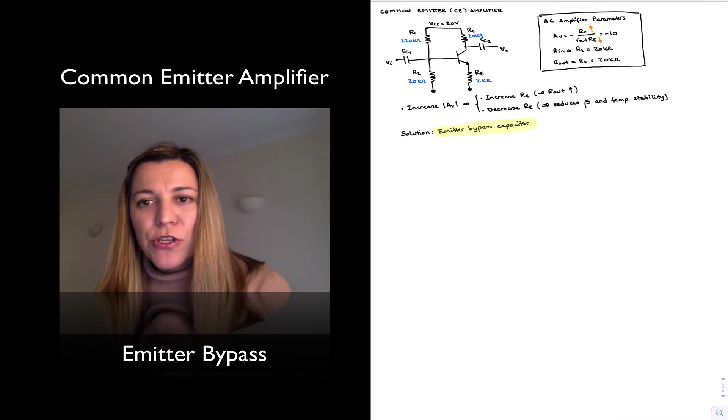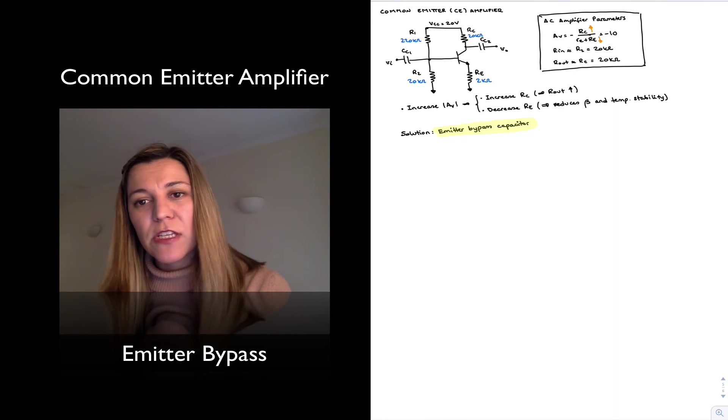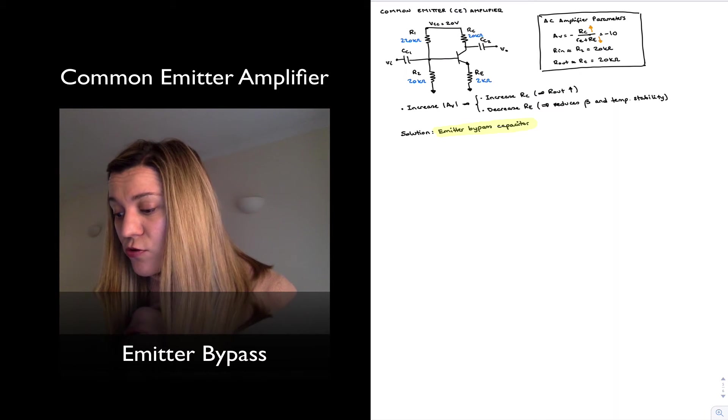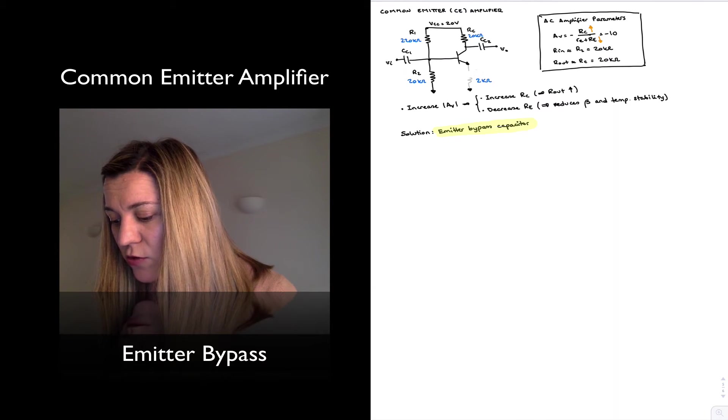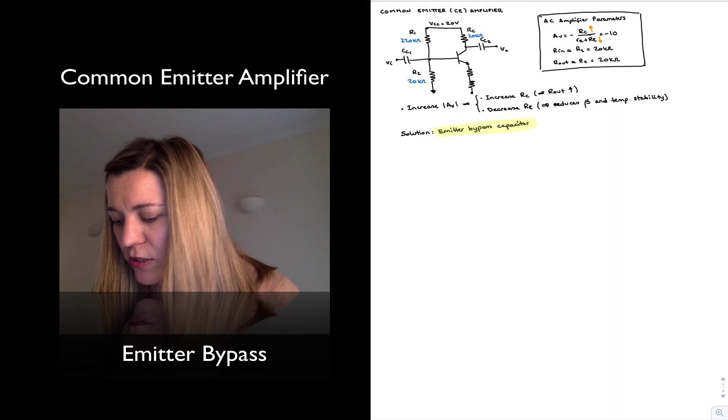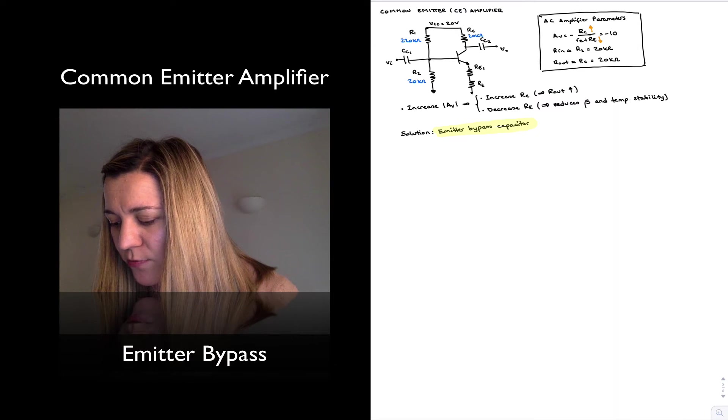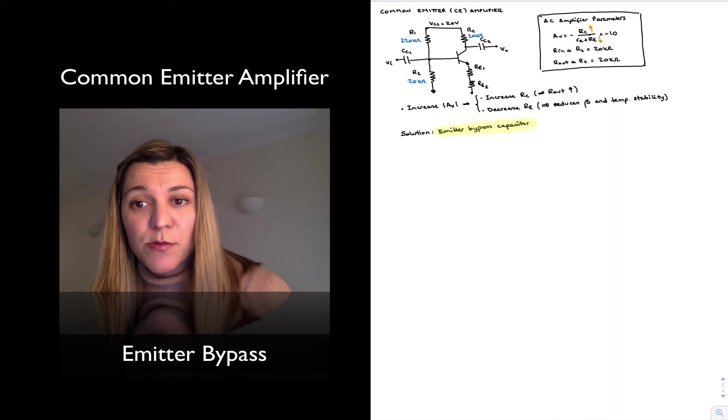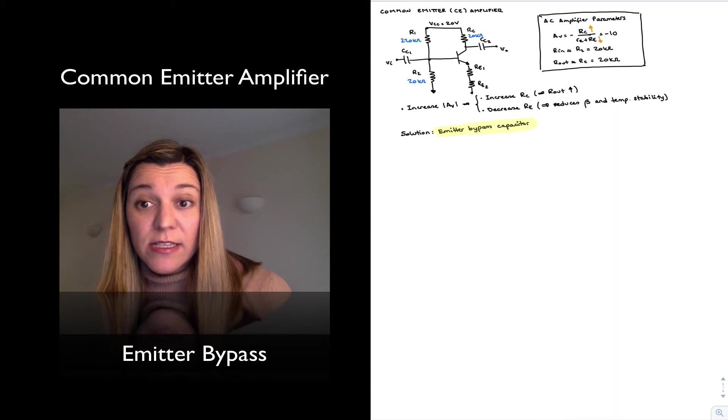First of all, I'm going to split my emitter resistor RE into a series combination of two resistors. So I can do this and substitute RE with two resistors, which I'm going to label RE1 and RE2. And as long as the series combination of those resistors is equal to two kilo ohms, I still have effectively the same circuit as before, so I haven't changed the circuit so far.